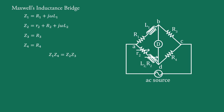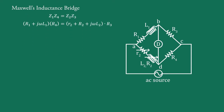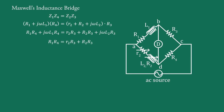For a balanced bridge, Z1·Z4 = Z2·Z3. Expanding this equation, we get (R1 + jωL1)·R4 = (r2 + R2 + jωL2)·R3. By equating the real parts of this equation, we get R1·R4 = (r2 + R2)·R3. Making R1 the subject, we get R1 = (R3/R4)·(r2 + R2), which is Equation 1.